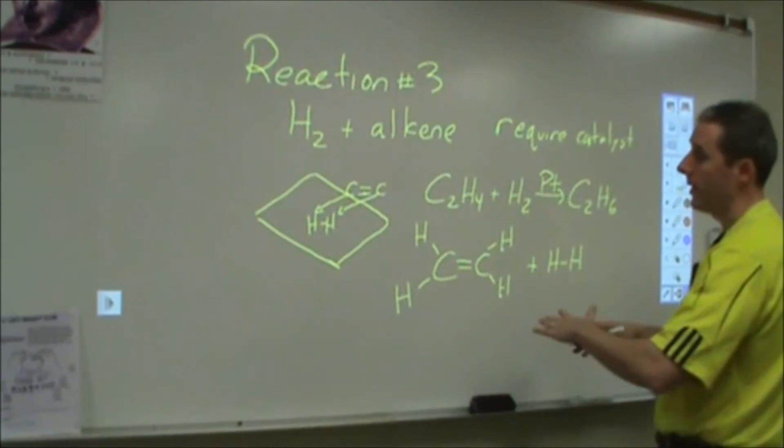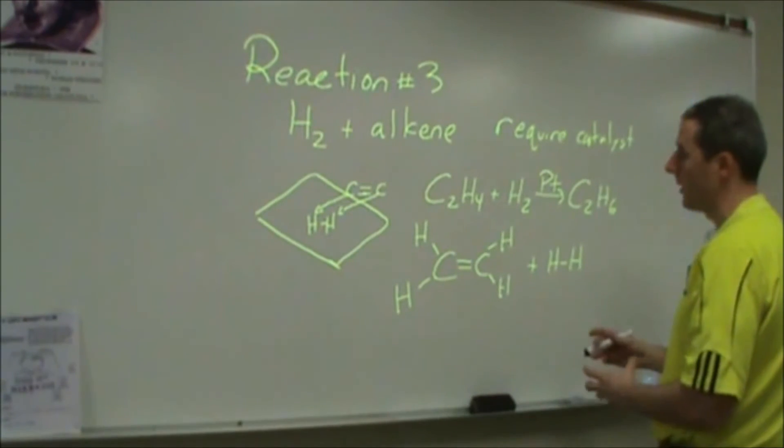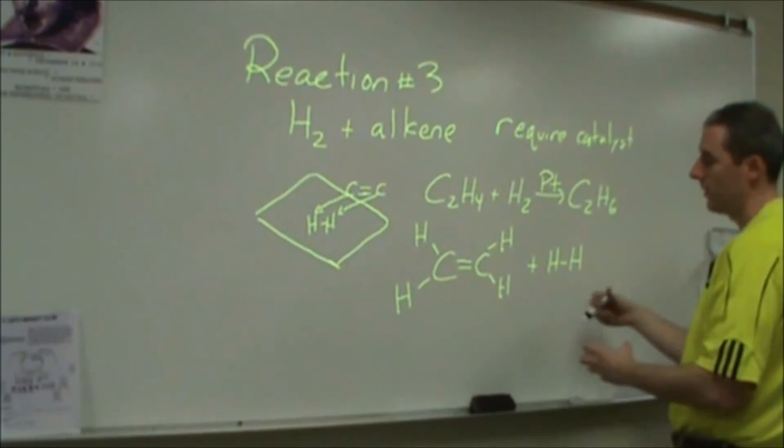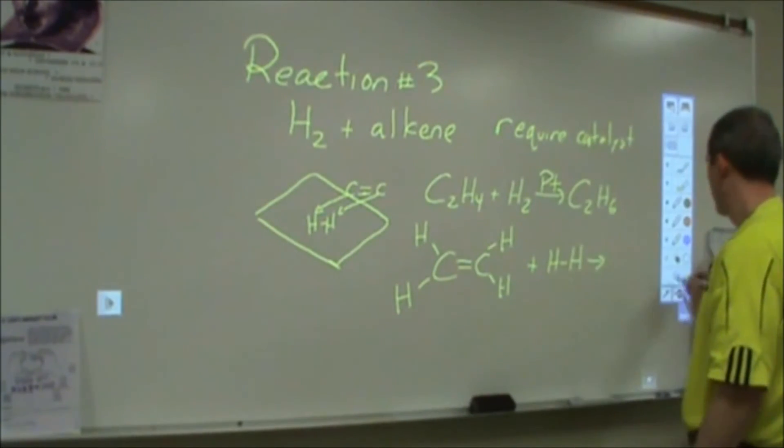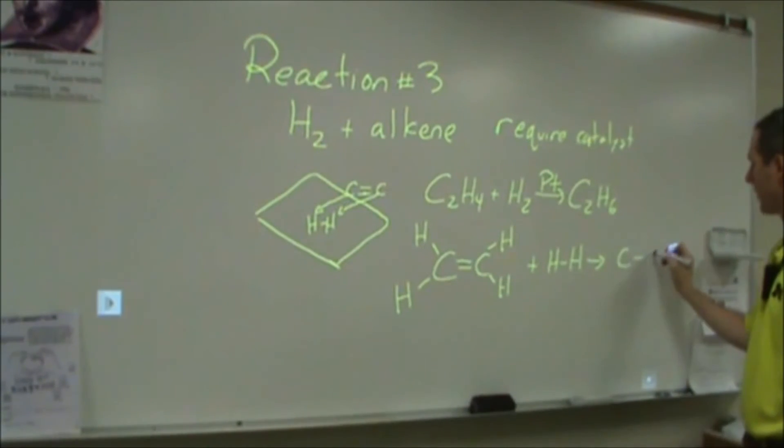And that's going to take place all on the surface of the metal, and so that electron density of the metal is going to help facilitate the motion of those so that we end up with a single bond and a fully saturated alkane, like this.